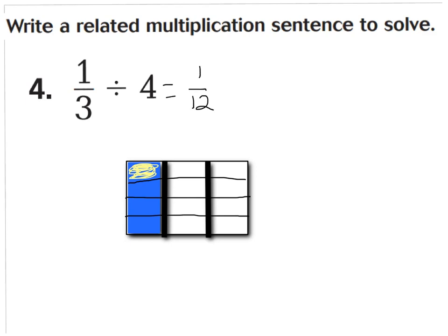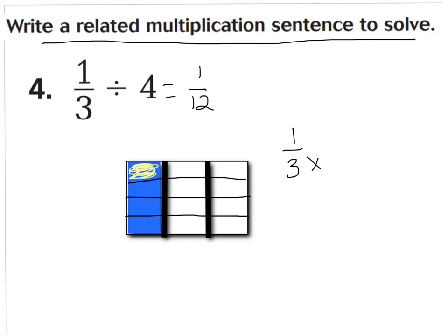Now the question says: write a related multiplication sentence to solve. So we're trying to find one-fourth of our one-third. Do you see how this is going to be one-fourth of our one-third part? So it would be one-third times one-fourth, because we're finding one-fourth of our one-third. And of course, each one of those parts would be worth one-twelfth.